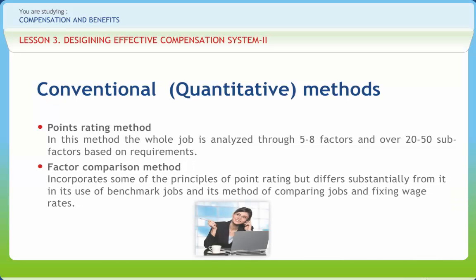Factor comparison method was originally developed in 1926 as an offshoot of point rating. This method incorporates some of the principles of point rating but differs substantially from it in its use of benchmark jobs and its method of comparing jobs and fixing wage rates. The first task in applying this method is to select and describe clearly the factors to be used. The factor comparison method involves the following steps: selecting benchmark jobs, ranking benchmark jobs by factors, allocating money values to factors, and ranking the other jobs and wage fixing.